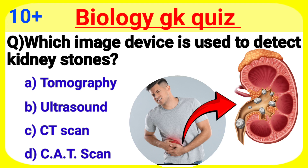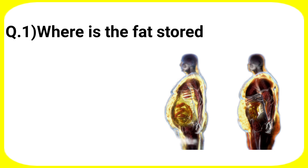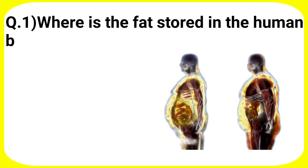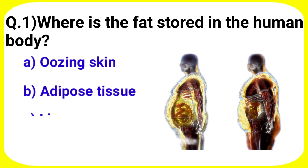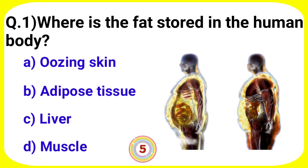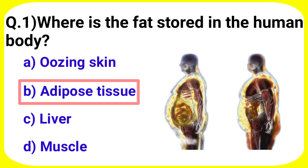Welcome to my another video. First question: Where is the fat stored in the human body? Your options are A. Washing skin, B. Adipose tissue, C. Liver, D. Muscle. Answer is option B. Adipose tissue.